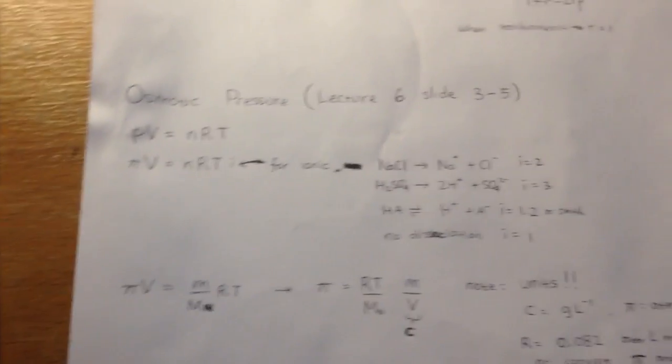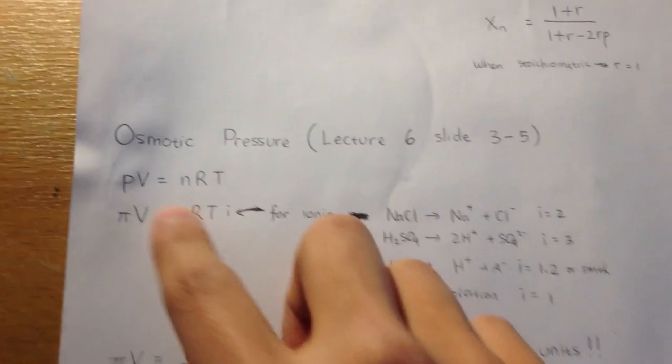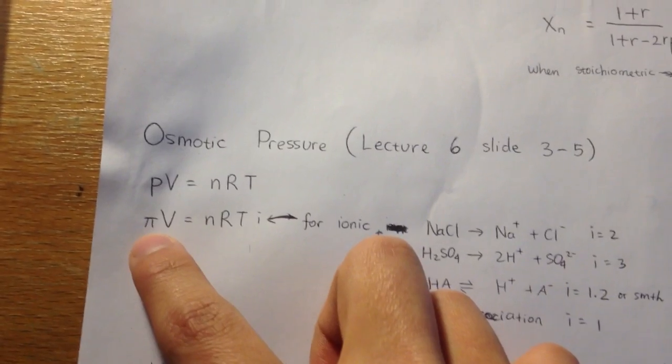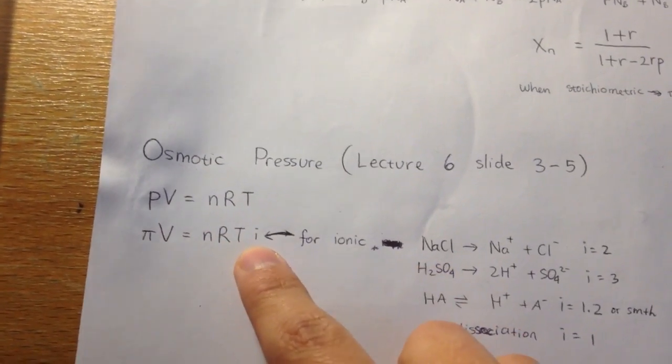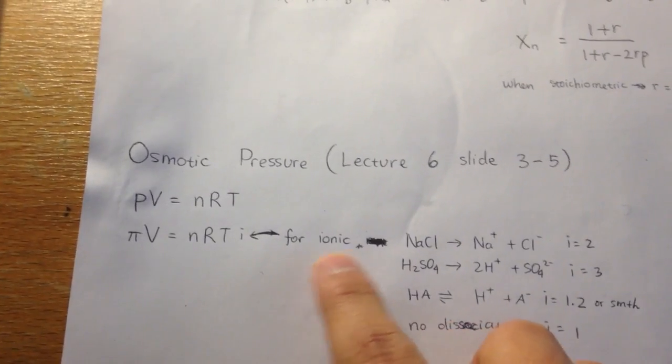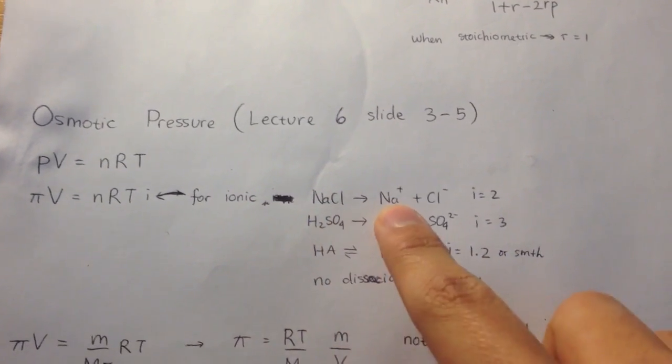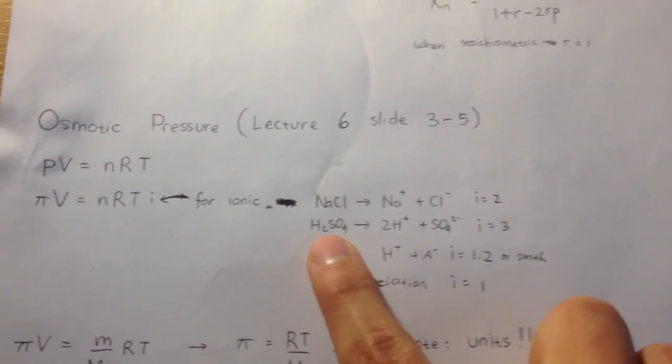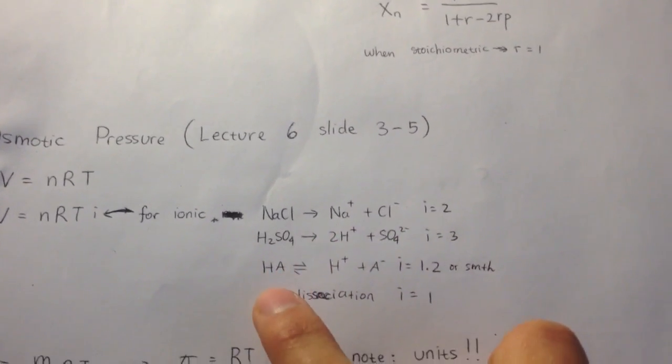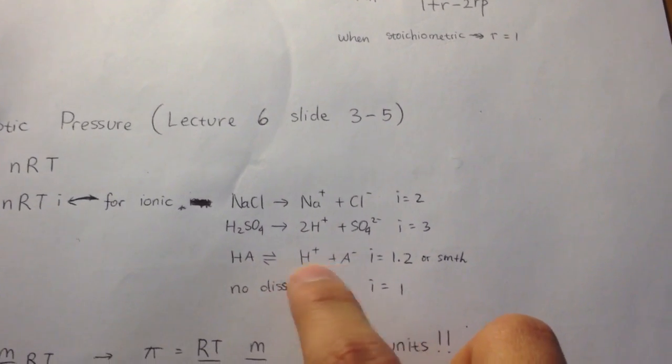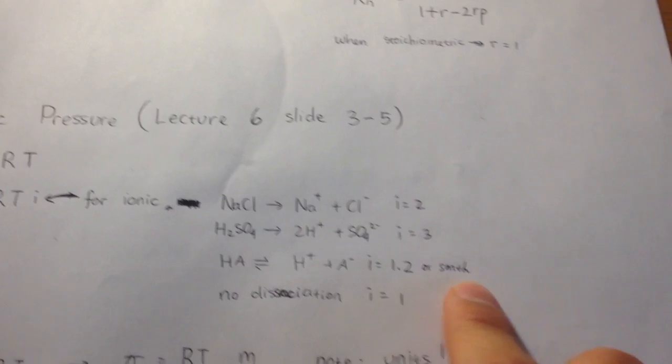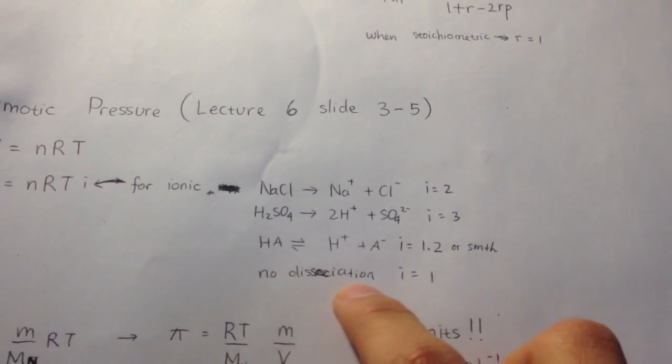Next is about osmotic pressure. If you remember the ideal gas equation PV = nRT, it's the same, just use pi instead of P, and there is i, called the van't Hoff factor. That's mainly for ionics. Like NaCl, it will be Na+ and Cl-, i will be 2. H2SO4, 2H+, SO4 2-, i will be 3. If it's a weak acid, so this will not be completely dissociated, i could be 1.2 or 1.1. If there's no dissociation, i will be 1.